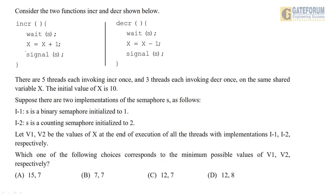Consider two functions — increment and decrement — using wait and signal. There are five threads each invoking increment once and three threads each invoking decrement once on the same shared variable x. The initial value of x is 10. There are two implementations of semaphore: I1 is a binary semaphore initialized to 1, and I2 is a counting semaphore initialized to 2. We need to find V1 and V2, the minimum possible values of x at the end of execution.